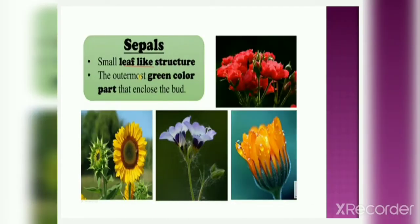Next is sepals. Sepals are small leaf-like structures — the outermost green colored part that encloses the bud. You can see in the picture, and you must have seen in flowers also the green leaf-like structure below petals. These are called sepals.